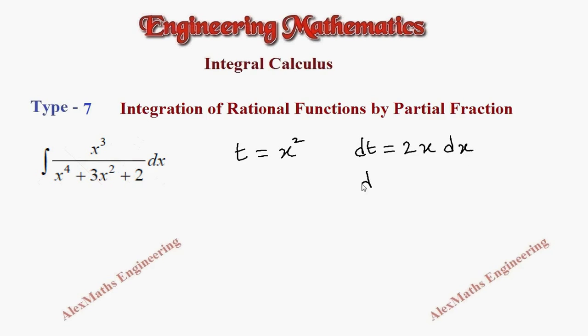And from this I can write dt by 2 as x dx. So the numerator x cube should be written as x square into x then we have dx whole divided by rest of the terms as it is x power 4 plus 3x square plus 2.